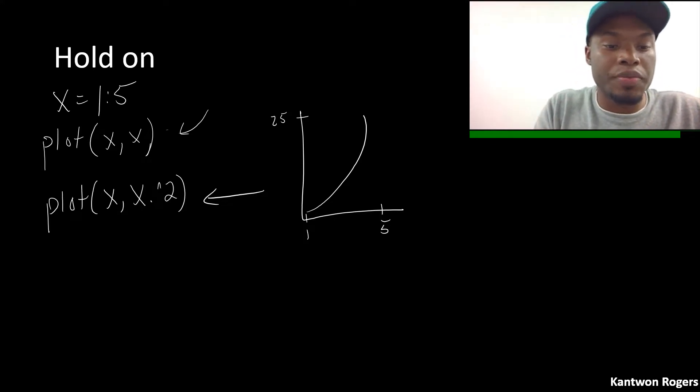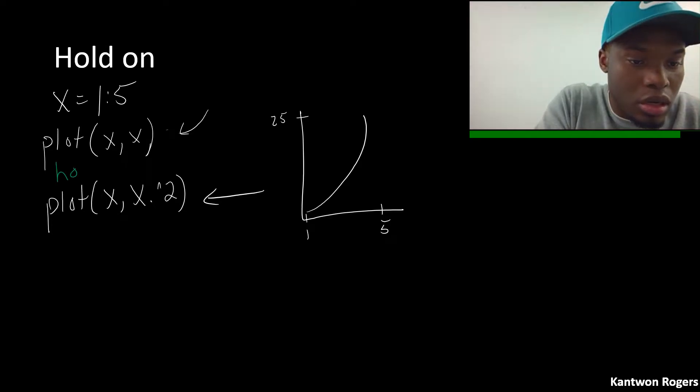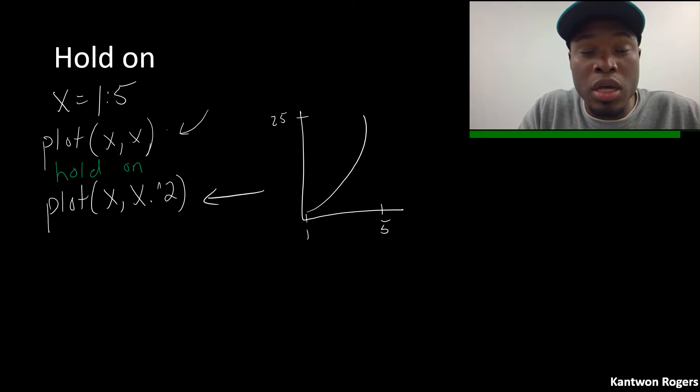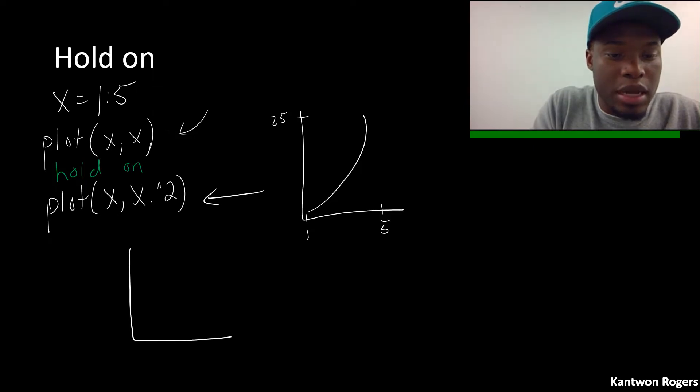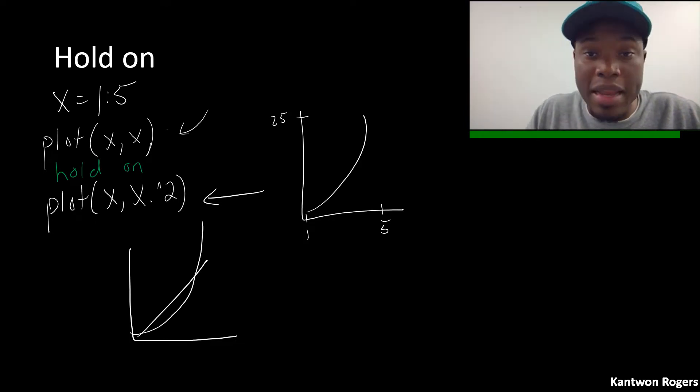So if I were to add in hold on in between these two plot commands, so it's just the word hold then space and then just the word on, then now what's going to happen is the first time it's going to plot my x versus x and then it's going to go in and then plot my x squared as well and both of my lines will be on the same figure.